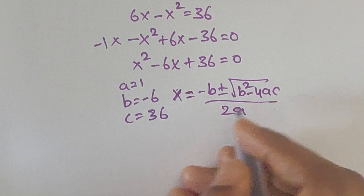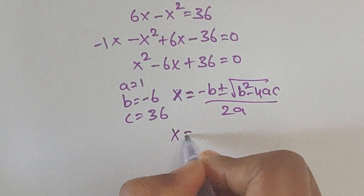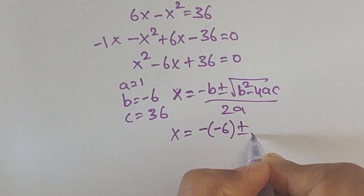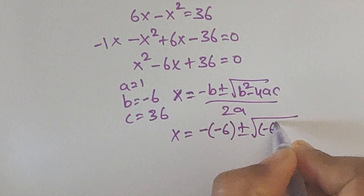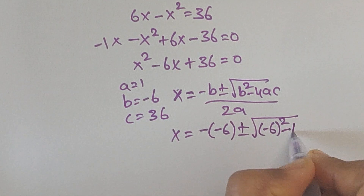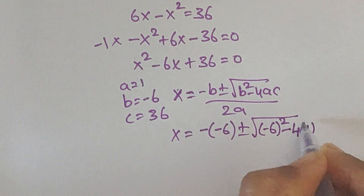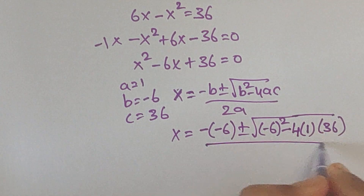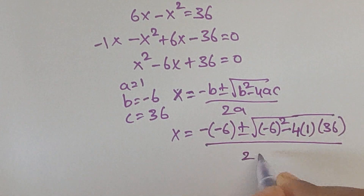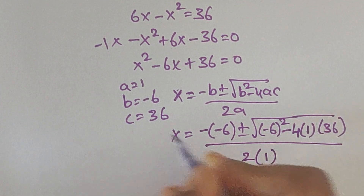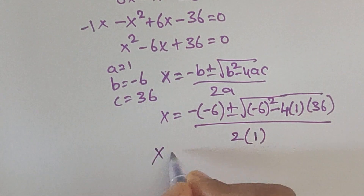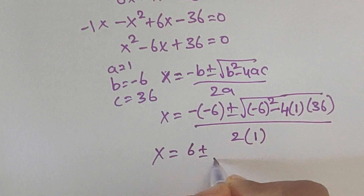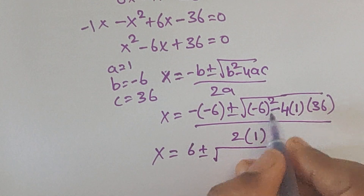Substituting a, b, c into the formula: x equals minus (minus 6) plus or minus square root of (minus 6) squared minus 4 times 1 times 36, divided by 2 times 1. So x equals 6 plus or minus square root of 36 minus 144, divided by 2.